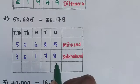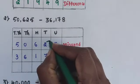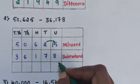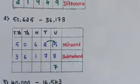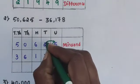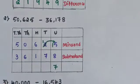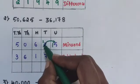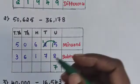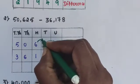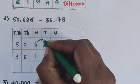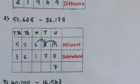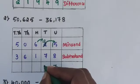5 minus 8 — 5 is smaller than 8. Take a carry from the tens place; make it 15. 15 minus 8 is 7. The remaining value in the tens place is 1. Now 1 minus 7 — 1 is smaller than 7. Again take a carry from the hundreds place; make it 11. 11 minus 7 is 4.